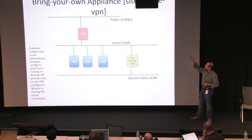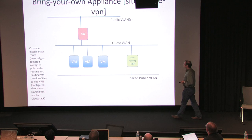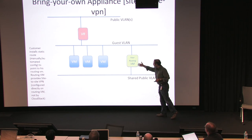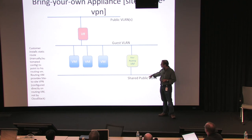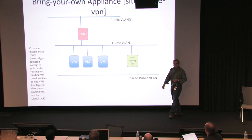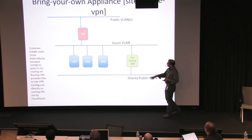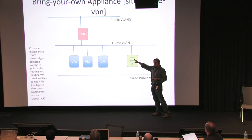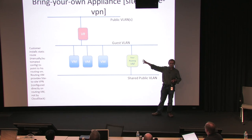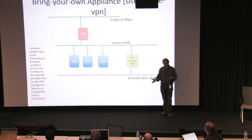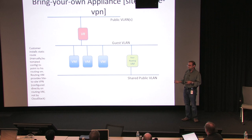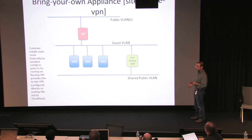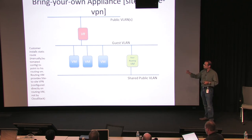The same concept applies to site-to-site VPN. I have seen people start up a Vyatta VM, give it access to a shared public VLAN, and suddenly their VMs have a site-to-site VPN to anywhere they want. The customer logs into the Vyatta VM and configures a site-to-site VPN by hand or with whatever automation tools they have — it is not through CloudStack. This is possible today and I have seen customers do it.